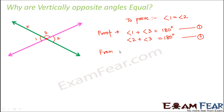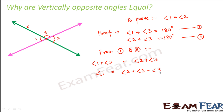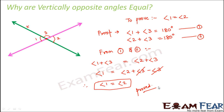From equations 1 and 2, since angle 1 plus angle 3 equals 180 degrees and angle 2 plus angle 3 also equals 180 degrees, we can write angle 1 plus angle 3 equals angle 2 plus angle 3. Moving angle 3 from the right-hand side to the left-hand side, plus angle 3 minus angle 3 cancels out to give zero. Therefore, angle 1 equals angle 2 — hence proved. This is how we have proved that vertically opposite angles are always equal. Similarly, you can prove that angle 3 equals angle 4 as an exercise.